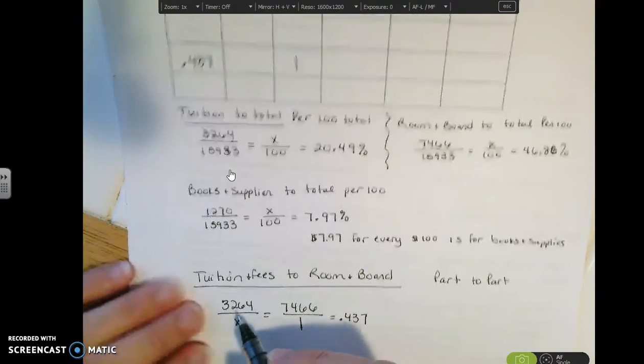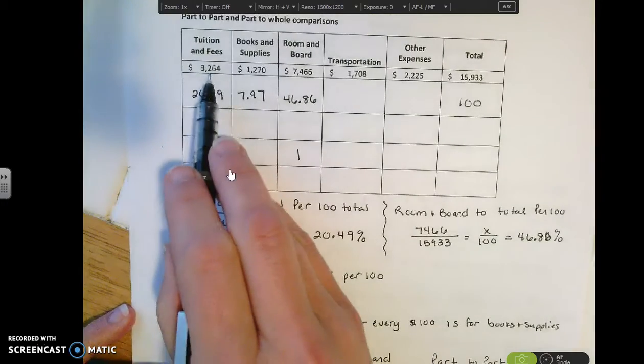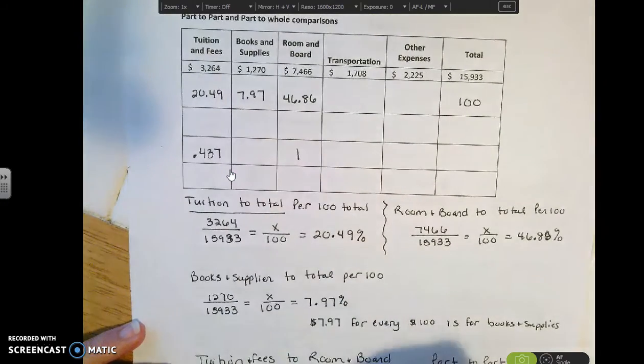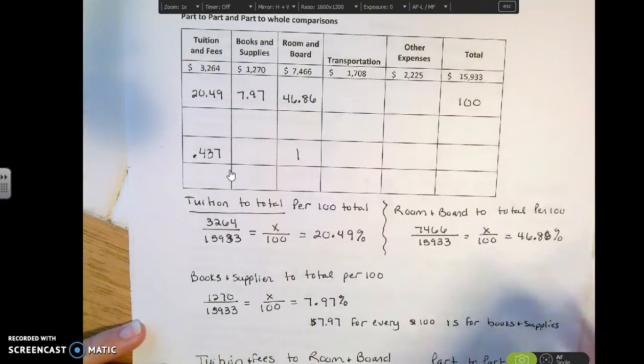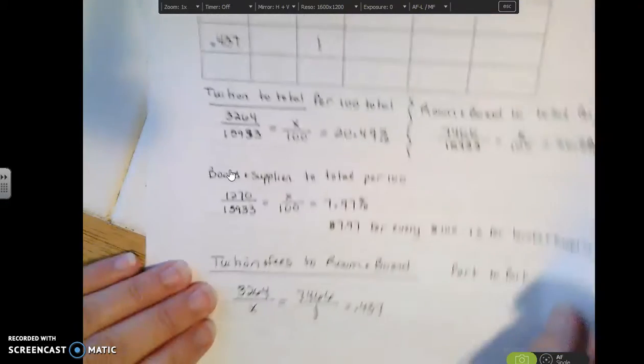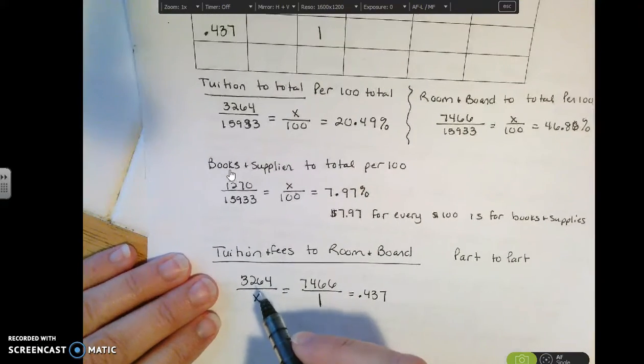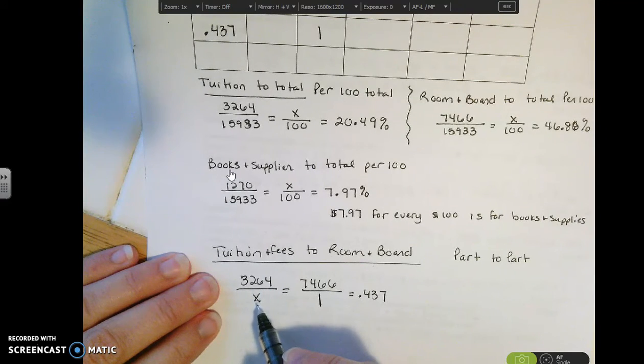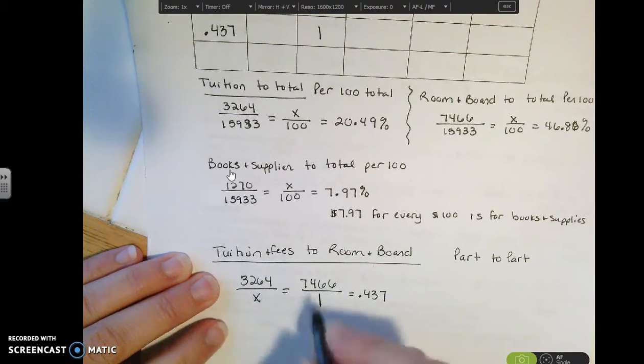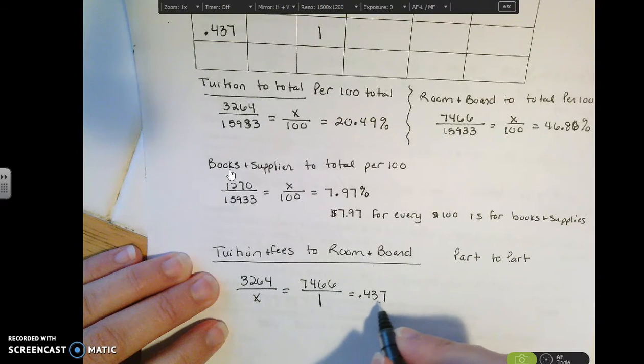So what we're doing is the tuition and fees are $3,264. The room and board is $7,466. So when I set up my ratio, I'm going to be setting up the $3,264 over x and the $7,466 to 1. When I cross multiply, I get 0.437.